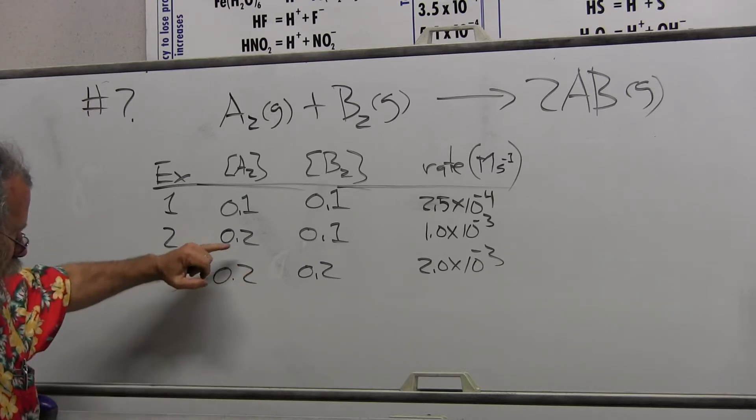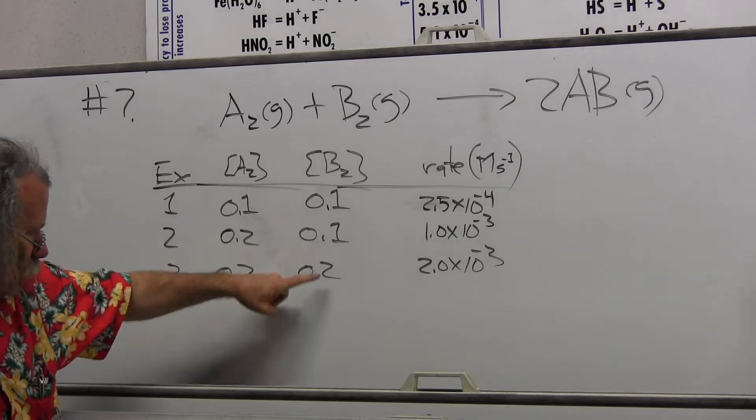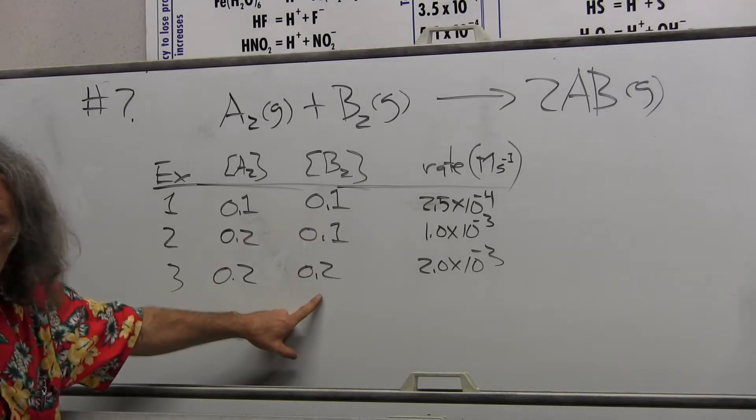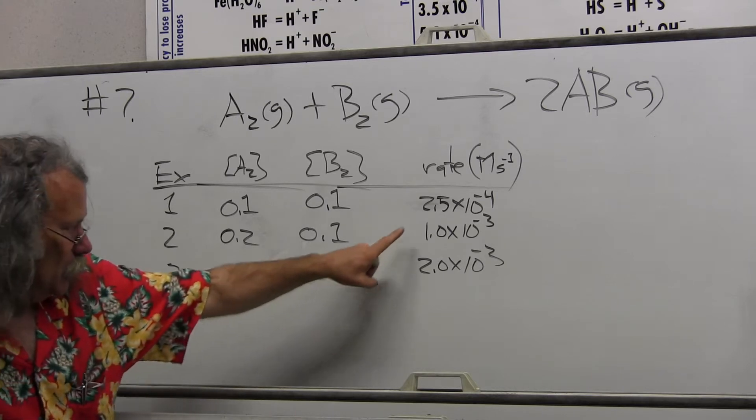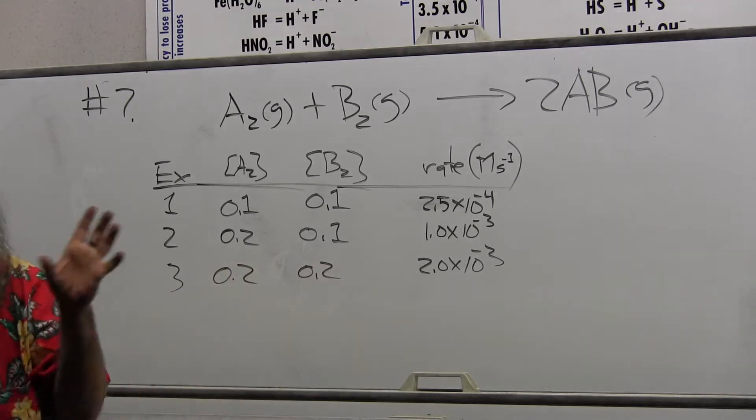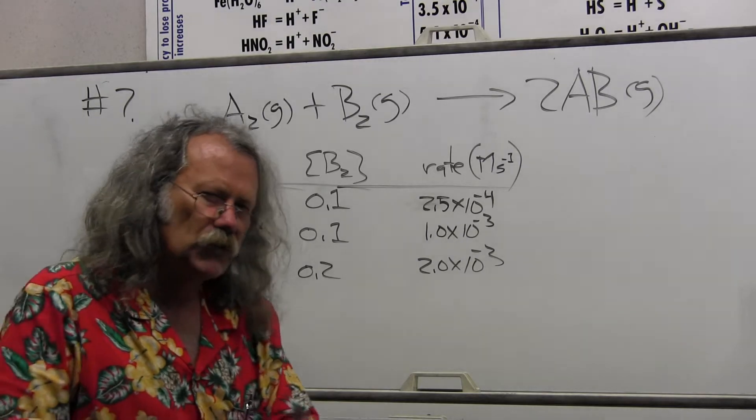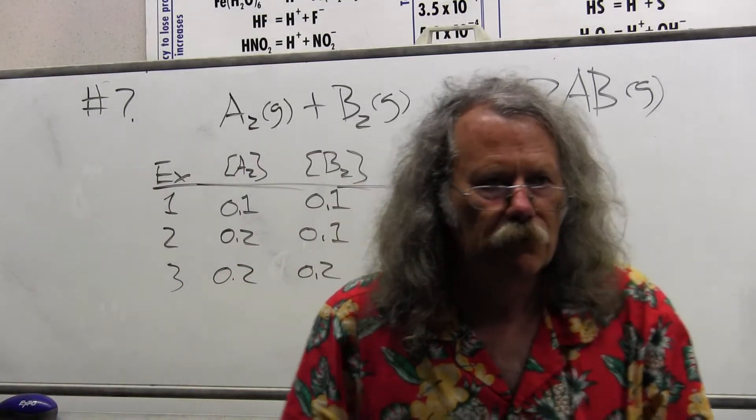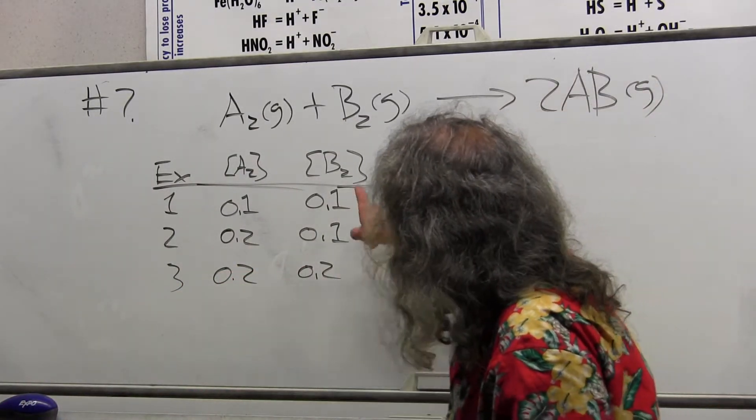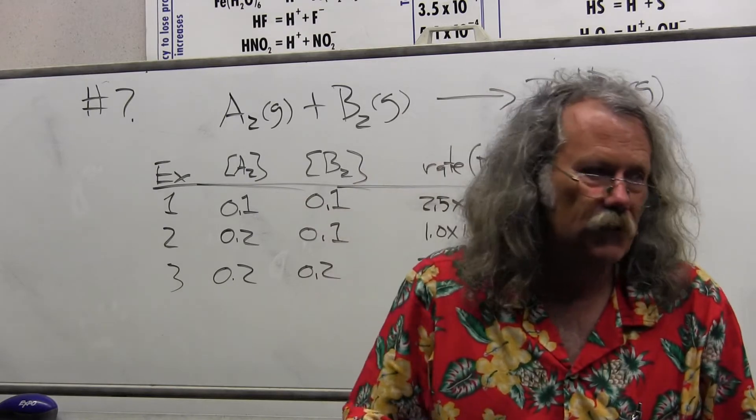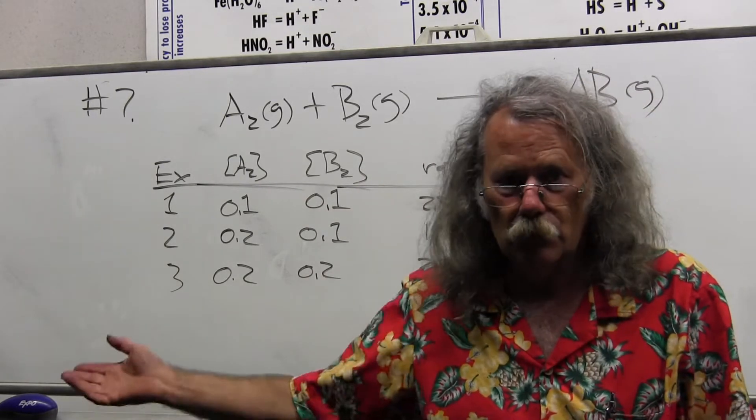Now when I held this concentration fixed and doubled the concentration of B, the rate doubled. So if I double the concentration, it doubles the rate. What order does that commensurate with? First order. So I'd say that it's first order in B and second order in A. So we can almost write the rate law directly.